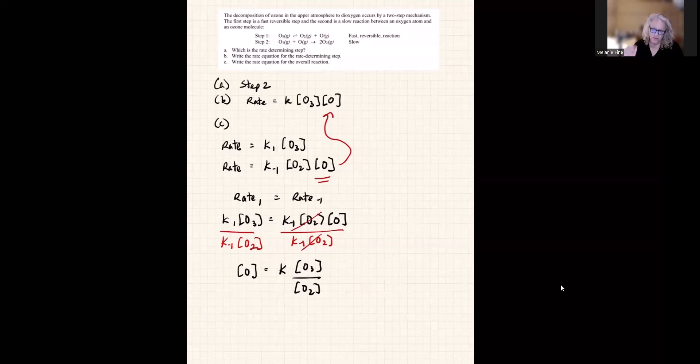This is all theoretical anyway. So then we substitute that, this O, into the second rate equation. So the rate of step two, which is the rate determining step. The rate determining step is K times O3 times O, which we know is K times O3 divided by O2.